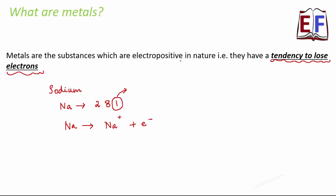That is why we say that sodium is electropositive in nature. Whenever an element loses an electron, it becomes positively charged — because now it has excess of positively charged ions. The negatively charged electron has moved out, so it has more positive charges and therefore becomes positively charged. This is a behavior which is seen with all the metals.